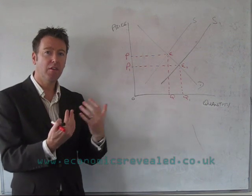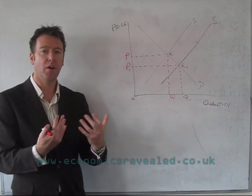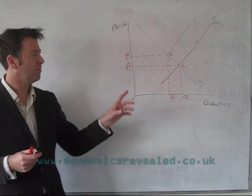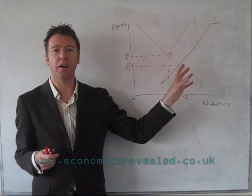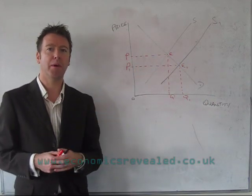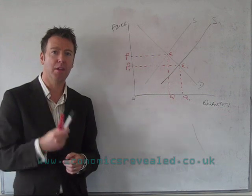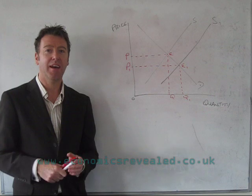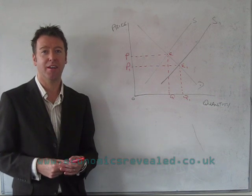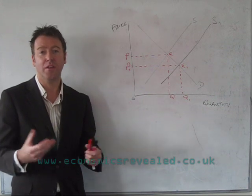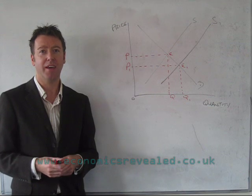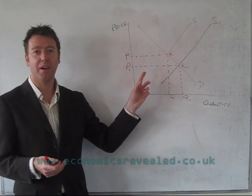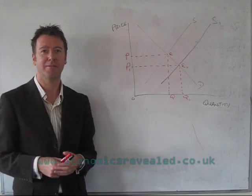So there are these constant movements going on the whole time, and it's sometimes difficult to work out whether it's a demand or a supply curve shift. But the supply curve is all about the supplier's ability to supply the product — it's the things that affect them. And the demand curve is all about the consumer's willingness and ability to buy. So hopefully if you keep that in your head, you'll be able to work out which curve is moving where.